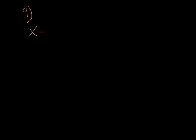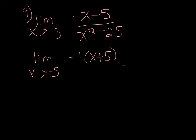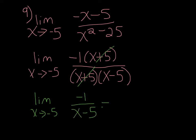Number 9 is evaluating the limit algebraically: the limit as x approaches negative 5 of (negative x minus 5) over (x squared minus 25). We factor both the top and bottom. The top: factor out a negative 1, leaving (x plus 5). The bottom factors to (x plus 5)(x minus 5). The x plus 5 terms cancel, leaving the limit as x approaches negative 5 of negative 1 over (x minus 5). Plugging in negative 5: negative 1 over negative 10, which is 1 tenth.